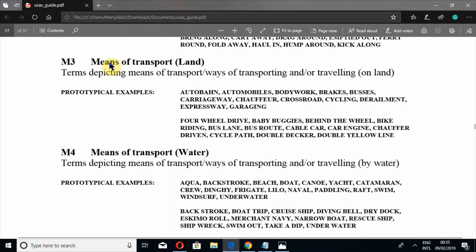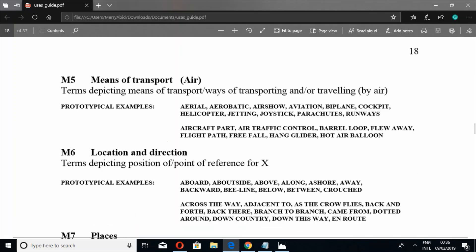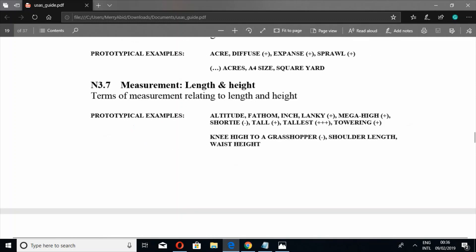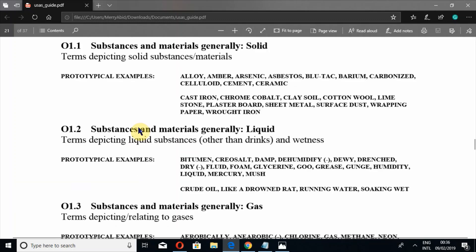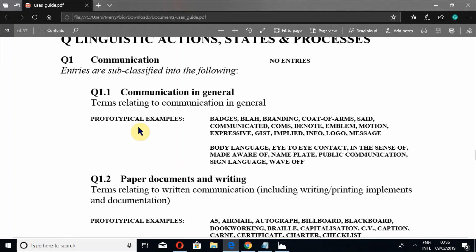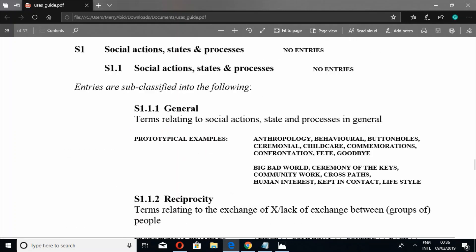This is also the transport, but M3 is for land and M4 is for water. So very quiet and very comprehensive and very near and very broad distinction, I should say, in semantic tags. If we go further down then we have to find S2.